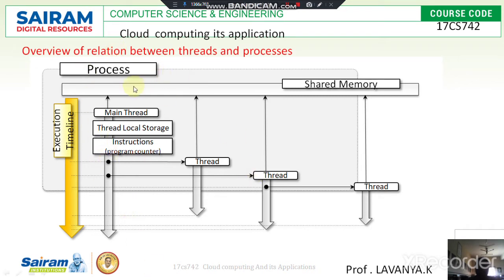In the process, they execute the main thread as well as thread local storage. The instructions are handled by a program counter, which holds the address value of the previous instruction. This is helpful for the next instruction to be executed and to store the value of the next instruction. The main thread identifies the process that contains at least one thread.